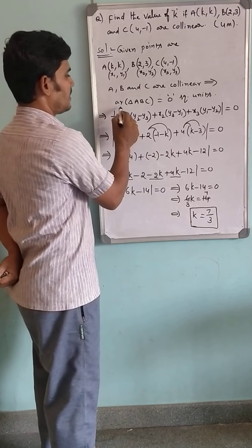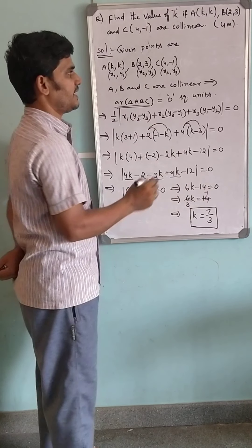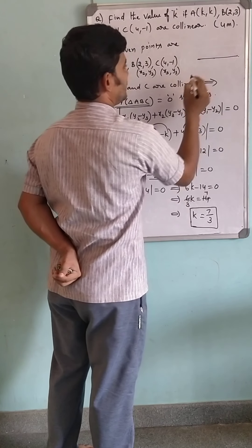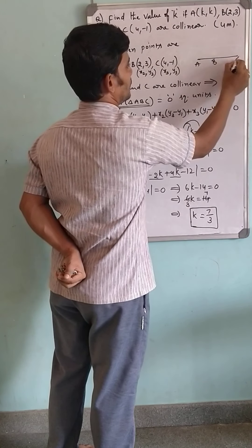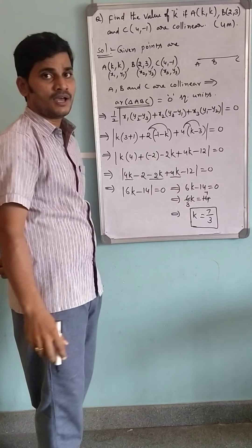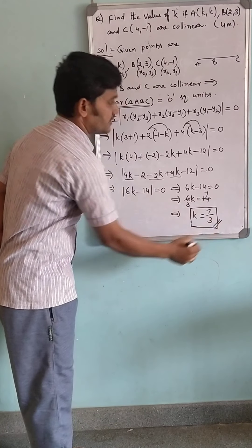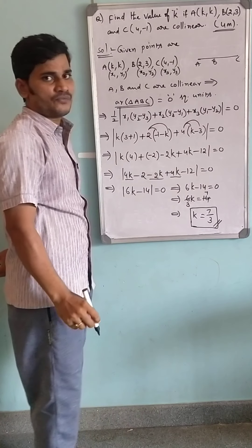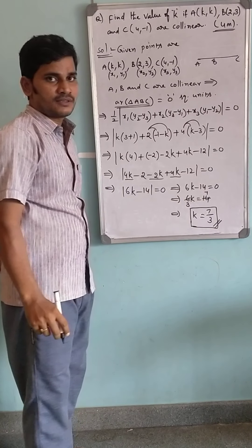This is how we find the value of K by taking the concept of area of triangle. If the three given points are collinear, thank you. I hope you understand. It is important for four marks, exam point of view. Thank you.